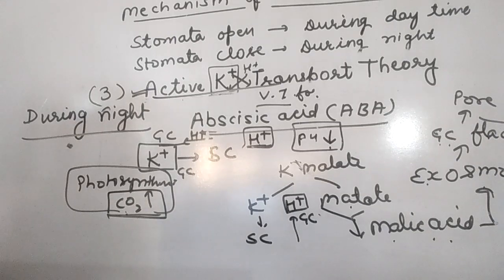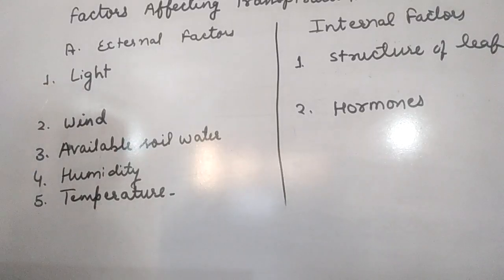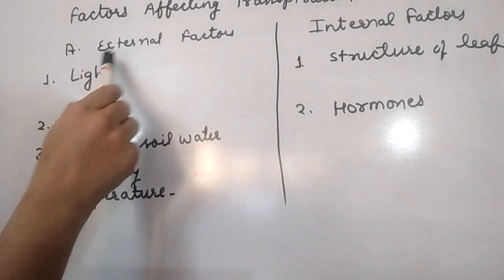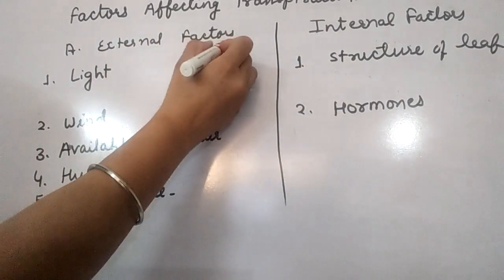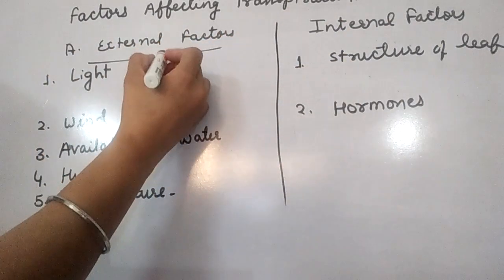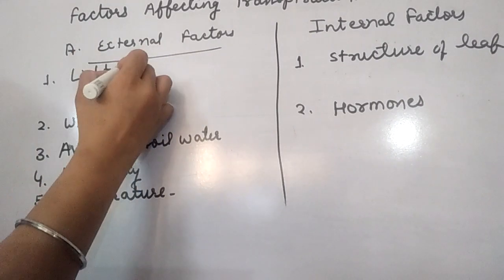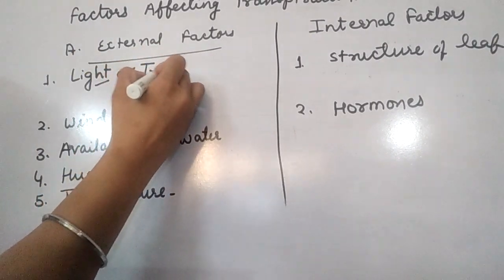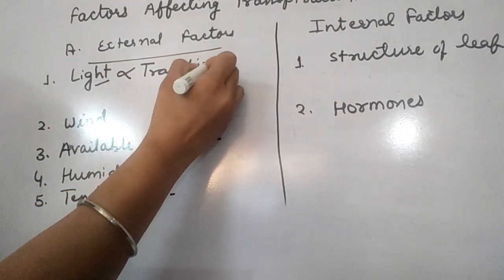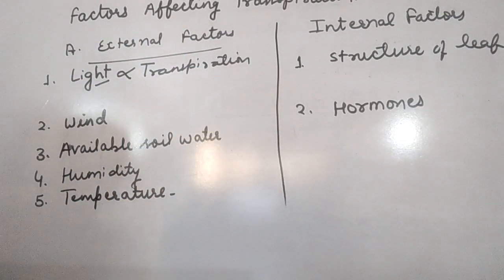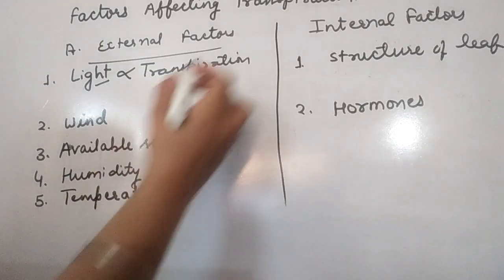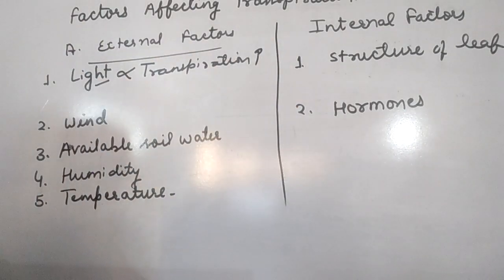Now we will see the factors affecting transpiration, which also affect stomatal opening and closing. There are two types of factors: external factors and internal factors. External factors are physical factors. First is light — light is directly proportional to transpiration rate, because in the presence of light stomata open, and therefore the transpiration rate is high.